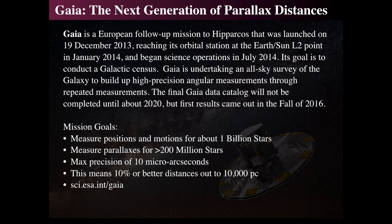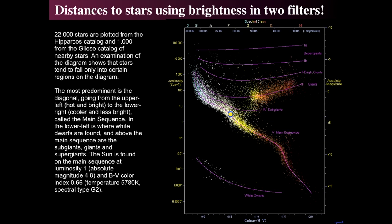Gaia doesn't make pretty pictures like the Hubble Space Telescope, but yet its impact will be greater. The trick is that we're actually going to find that we can derive the distances to stars by simply looking at the brightness of two stars in two different standardized filters.